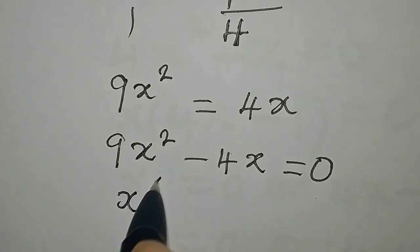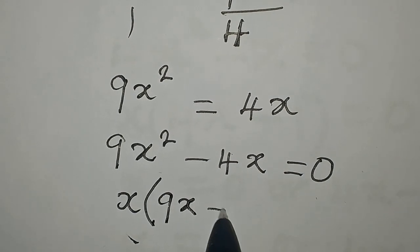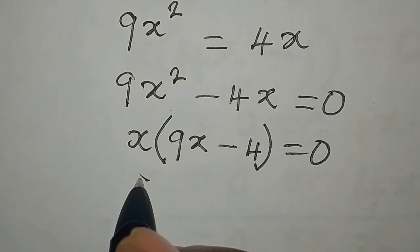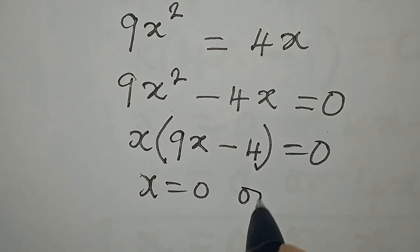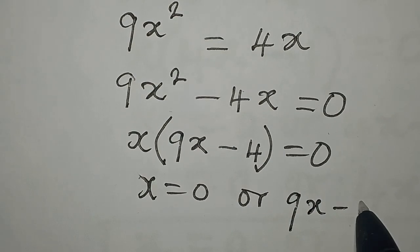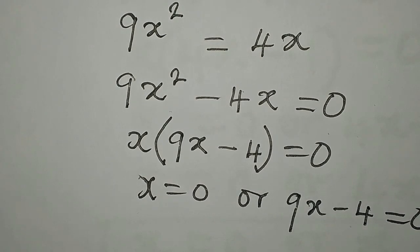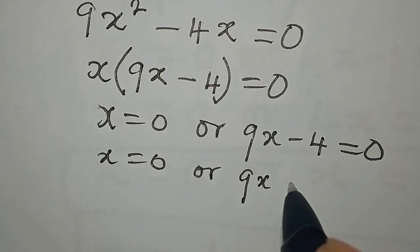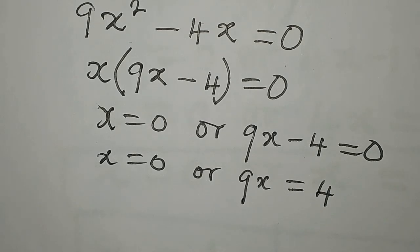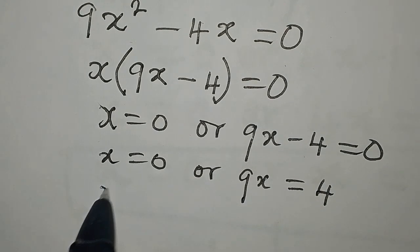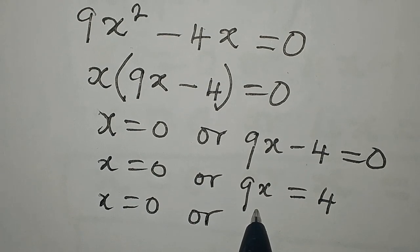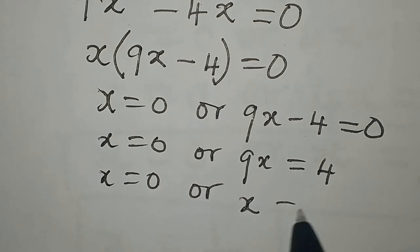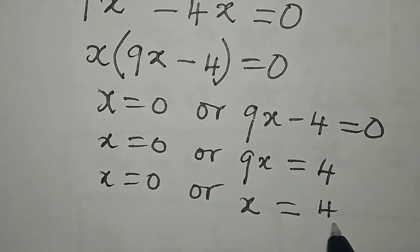The common factor is x, so we factorize: x times (9x minus 4) equals 0. This means x equals 0, or the second factor 9x minus 4 equals 0. From the second factor, 9x equals 4, and dividing both sides by the coefficient of x, which is 9, gives x equals 4 over 9.